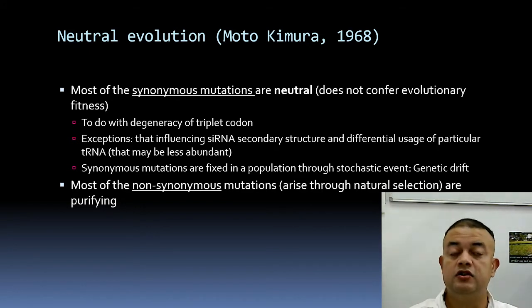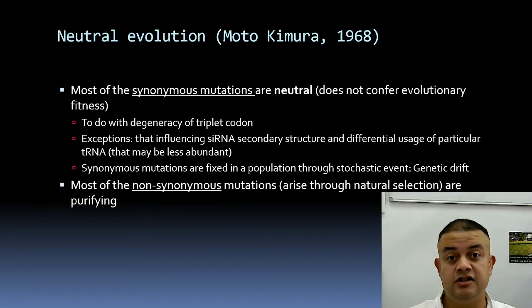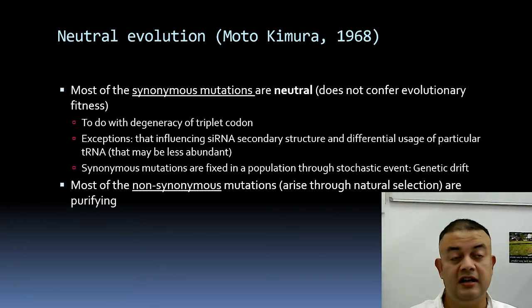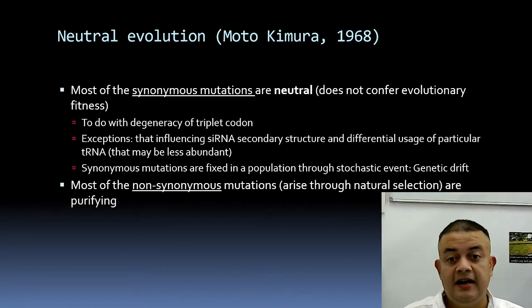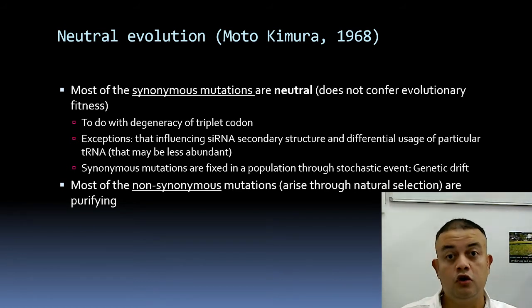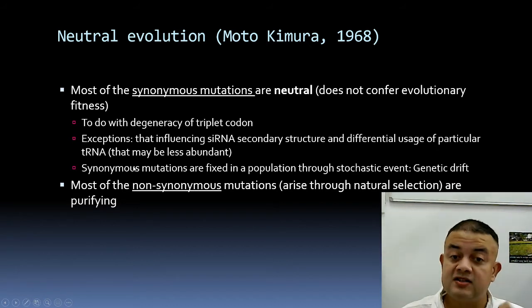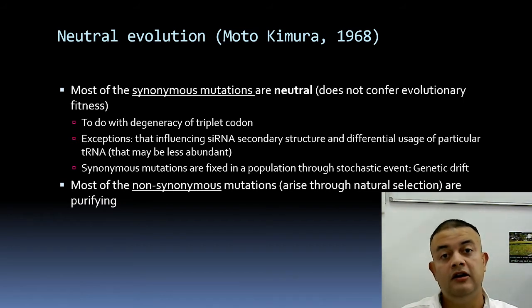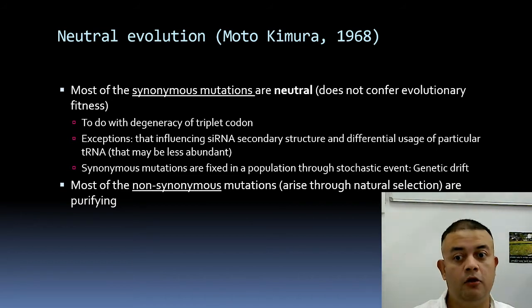Kimura's neutral theory of molecular evolution states that most synonymous — i.e., silent — or neutral mutations do not confer evolutionary fitness. This relates to the degeneracy of the triplet codon: the third position is highly degenerate — about 98% — meaning mutations there rarely cause amino acid changes. Most mutations are therefore synonymous or silent. Such synonymous mutations are fixed in a population through the stochastic process called genetic drift, which is more important when populations shrink during bottlenecks.